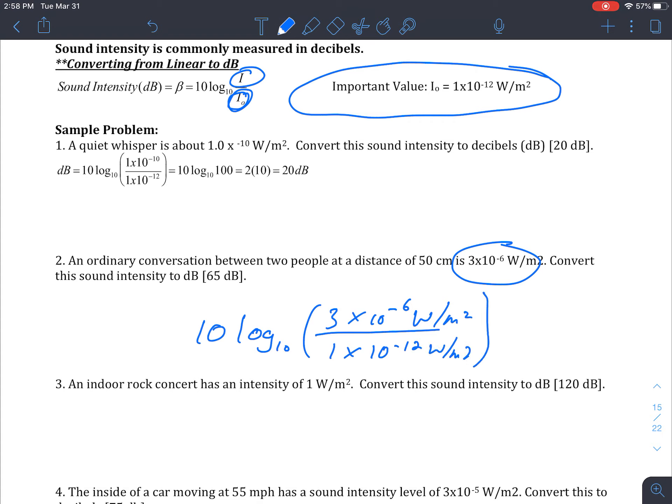I didn't necessarily write this correctly. So when we plug this in, we're basically going to plug in our calculator, this information here. And then we're going to hit our log button, and then times 10. And it should come out with 65 decibels.